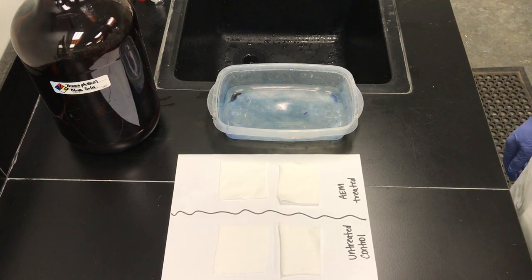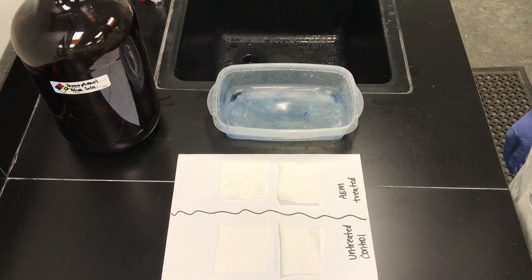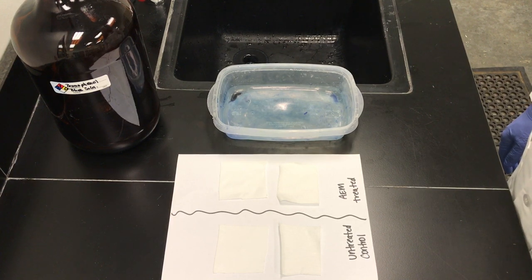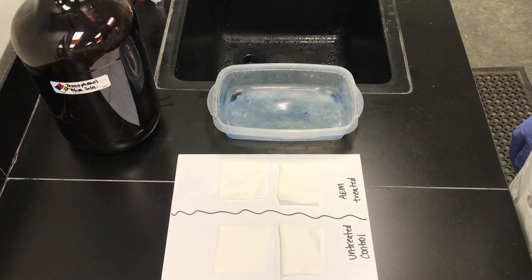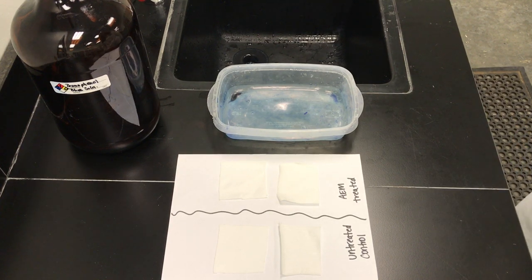The bromophenol blue or BPB direct stain is a quick and easy screening tool to determine if there is AEM treatment on a surface. In just a few basic steps one can quickly verify that AEM was applied to the fabric or other substrates.